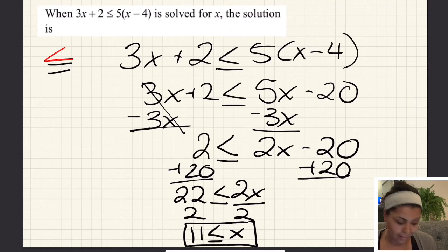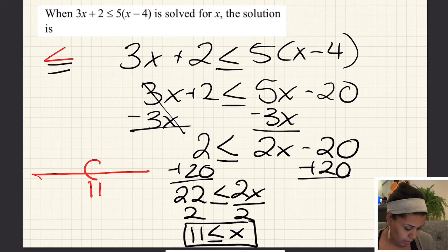Let's start graphing. I'm going to draw a line, put 11. I'm going to put a circle and think, can 11 be part of my solution? Yes, it can, because we just said it can be equal to 11. So I'm going to fill in that circle. That's all it means—I can include 11.